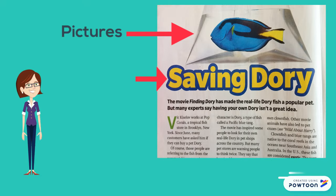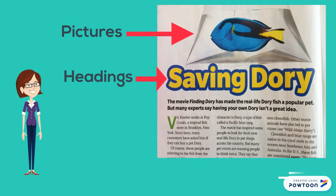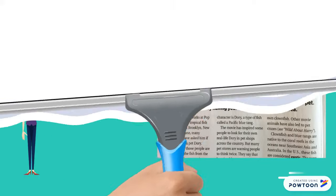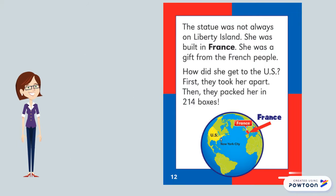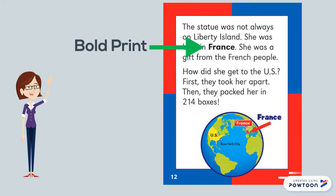Next are headings. Headings are there to tell you what the article or story is going to be about. Another text feature is bold print. The author uses bold print or darkened words to help point out important words or keywords that you need to pay attention to.